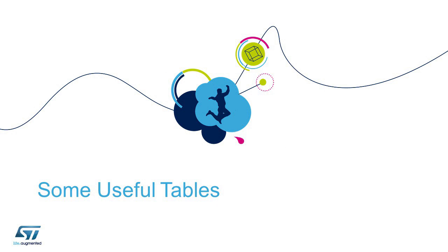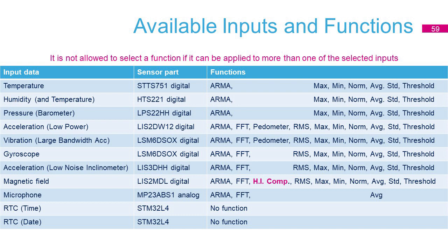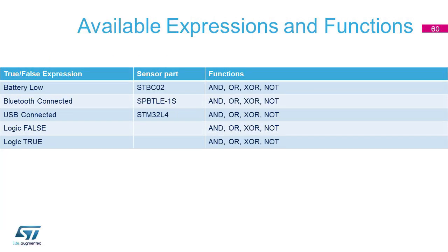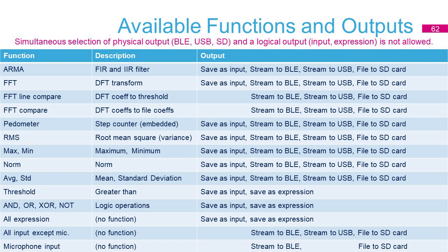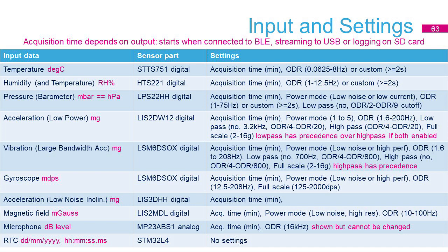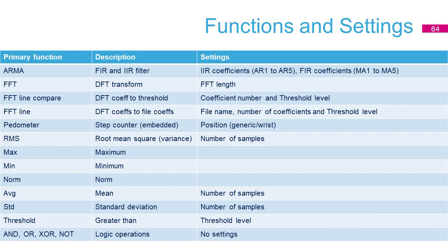The following slides list all the inputs and functions available inside the SensorTile.Box — a sort of reference manual. On the left, you can see the input name; in the center column, the sensor name; and on the right-hand column, the functions that can be applied to that input. There are also additional virtual inputs that can be used to detect specific conditions to enable specific reactions by the SensorTile.Box. This slide is about functions, listing what additional functions can be connected to the first one in an app, with brief descriptions and possible outputs. This chart lists the settings possible for the different inputs and functions.